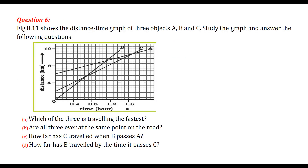The graph shows the distance-time graph of three objects A, B, and C. Which of the three is travelling the fastest? At the same time, the distance travelled by B is higher than either C or A. Though C and A are taking more time, in lesser time B has reached a higher distance. So B is travelling the fastest.